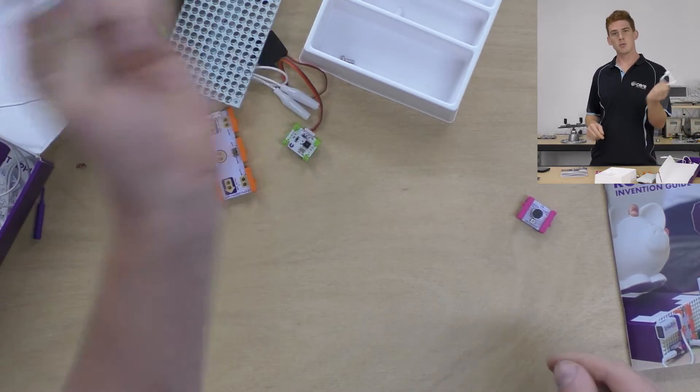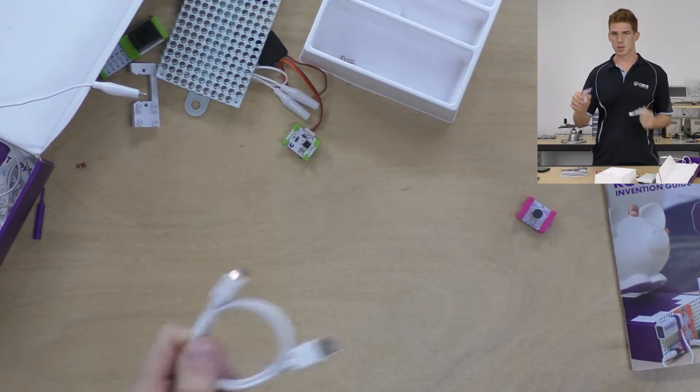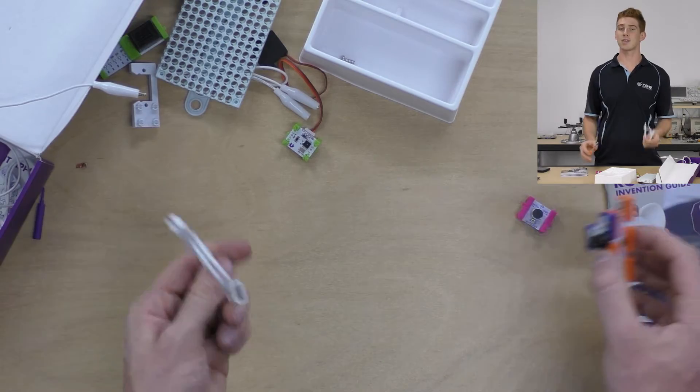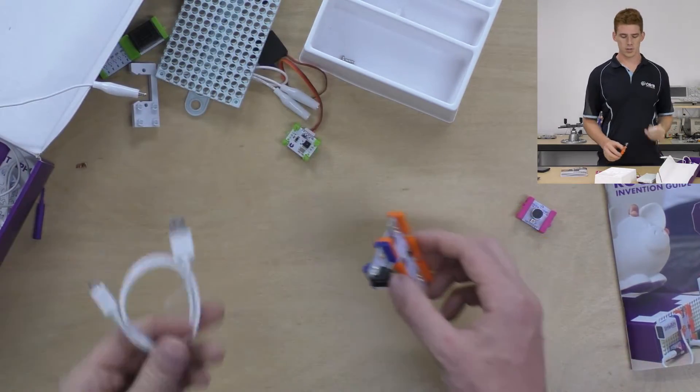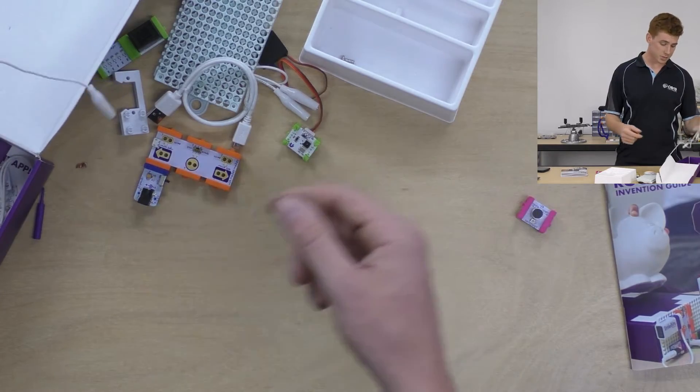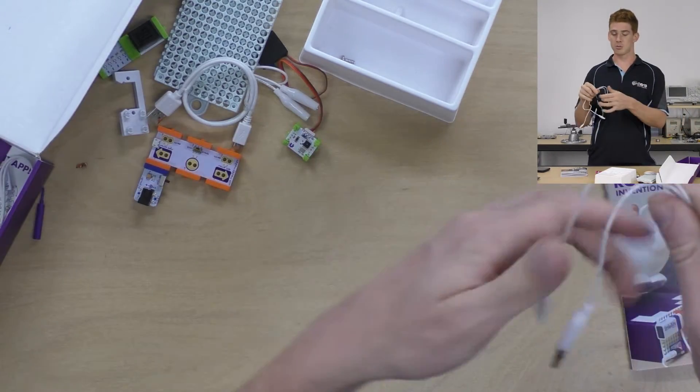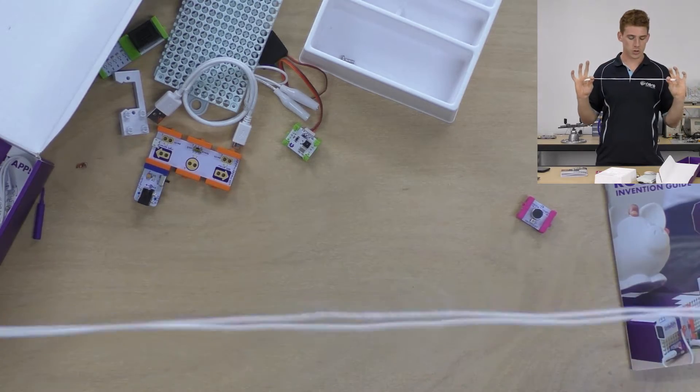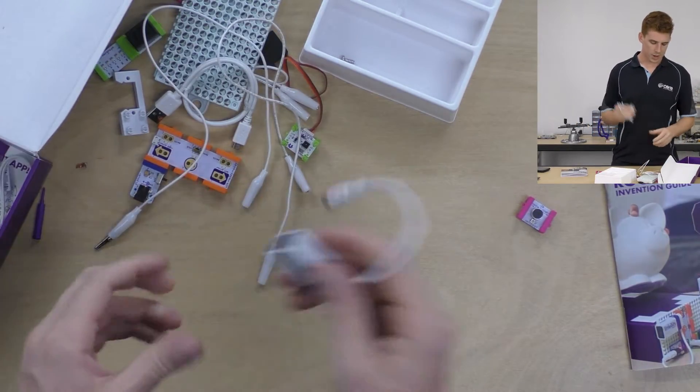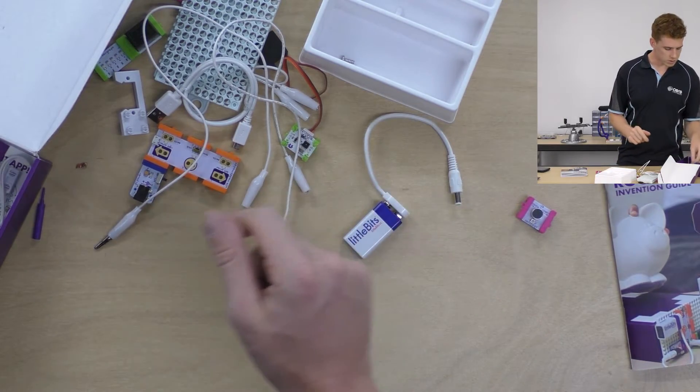Now, you get a USB cable. Remember I was talking about the Makey Makey Bit connecting to your computer? There's an invention in the guide about connecting up to your computer, and this is how you'll do it. So, you'll use that little micro USB cable. There's nothing special about that one. It's just a micro USB cable. You've got four alligator clips, like we showed you before, and they're for your Makey Makey Bit. Got the battery and the battery snap, we've already looked at.